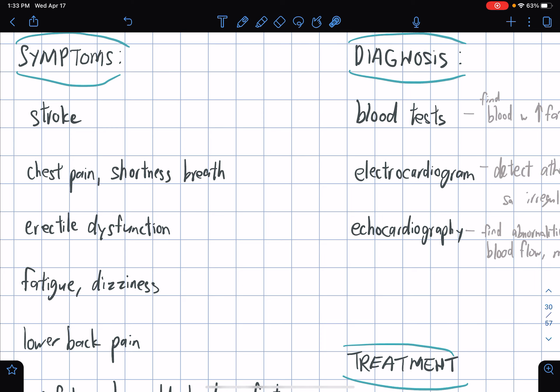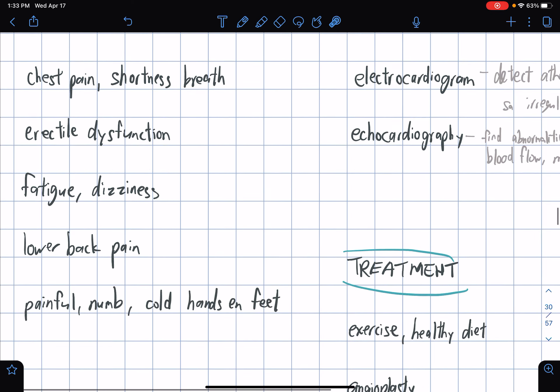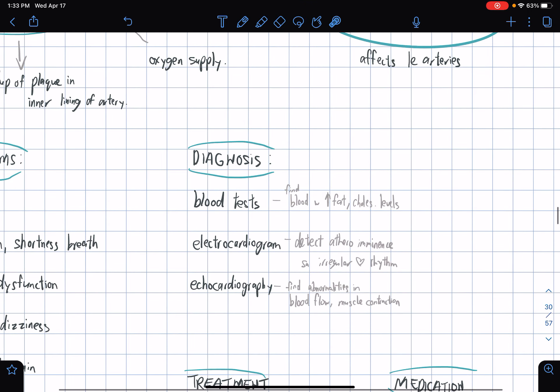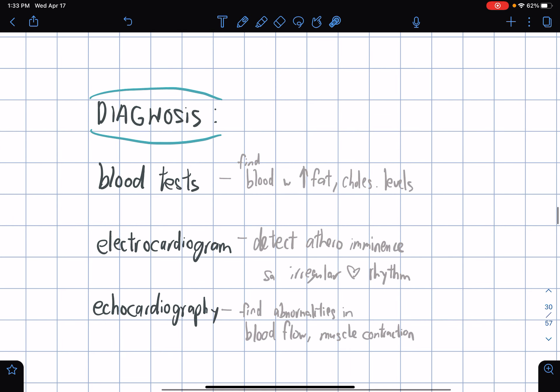What are the symptoms? We have stroke, chest pain, shortness of breath, erectile dysfunction - it's difficult to be erect. You have fatigue, dizziness, lower back pain, painful, numb, and cold hands and feet.